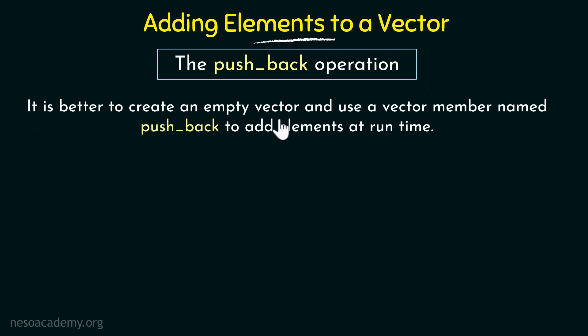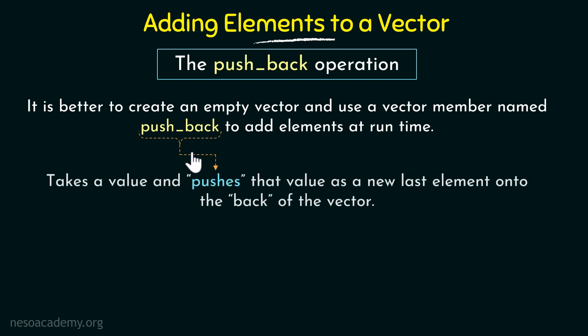As a solution, we have the push_back operation. It is always better to create an empty vector and use the vector member push_back to add elements at runtime. When we discussed vectors earlier I mentioned that it is possible to create empty vectors — now we understand why that is important. Empty vectors allow us to create the vector first and then add elements as and when required. push_back takes a value and pushes it as a new last element onto the back of the vector, so the vector can keep growing as needed.